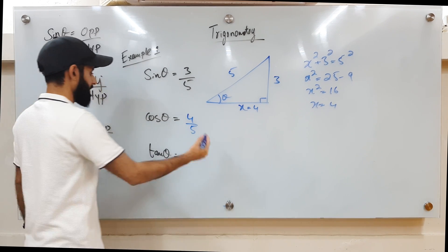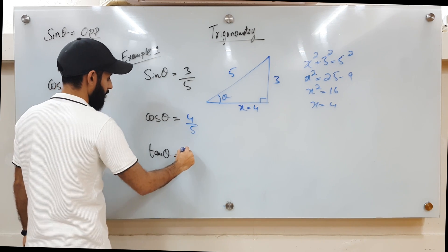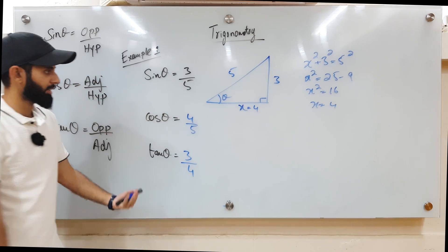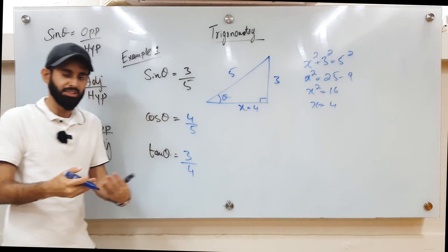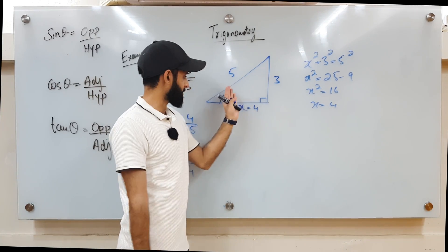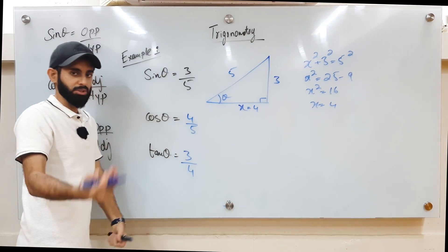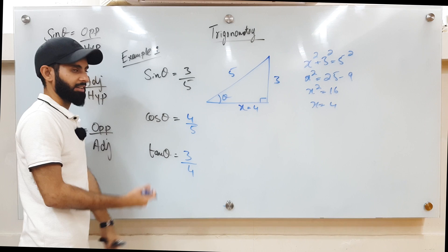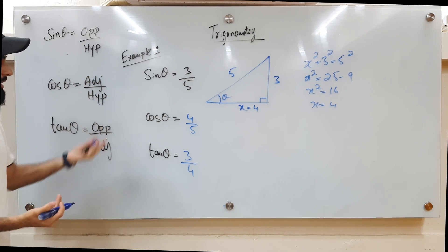Tan theta equals opposite over adjacent, so that's 3 over 4. To clarify: the adjacent length is between the angle we're considering and the 90-degree angle; the opposite is opposite theta; and the hypotenuse is opposite the 90-degree angle and is the longest side. That was our first concept in Ad Math trigonometry.